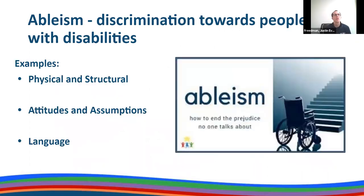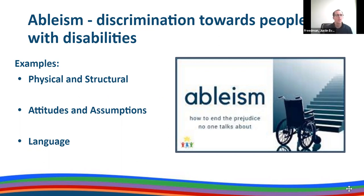Another key idea related to a social model of disability is ableism. Ableism is discrimination towards people with disabilities. There is an image on the right-hand side that says 'Ableism: How to End the Prejudice No One Talks About.' It's very much similar to other isms like racism and sexism — discrimination based on race or sex — but in this case, based on ability or disability. A physical example is a ramp not being built to provide an accessible entrance for an individual who uses a wheelchair.